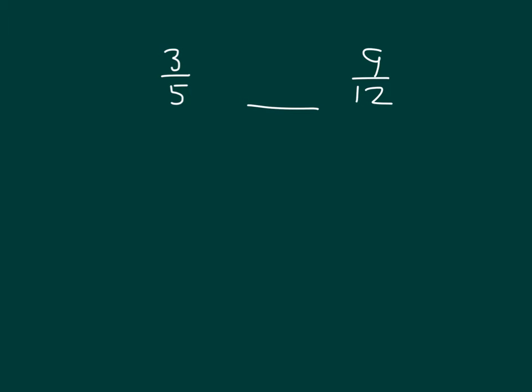Here we're asked to compare three-fifths with nine-twelfths. One of our strategies is to take a look at our numerators and make common numerators so that we're looking at the same amount of units. So in this case, we recognize that three can actually be multiplied by three to get nine. So we can rewrite and rename three-fifths by multiplying by three to get nine in the numerator. And if we multiply by three in the numerator, we must do the same thing in the denominator.